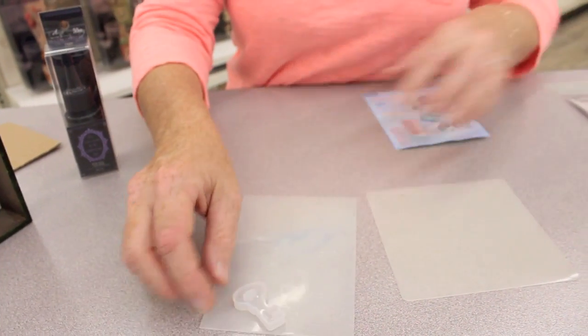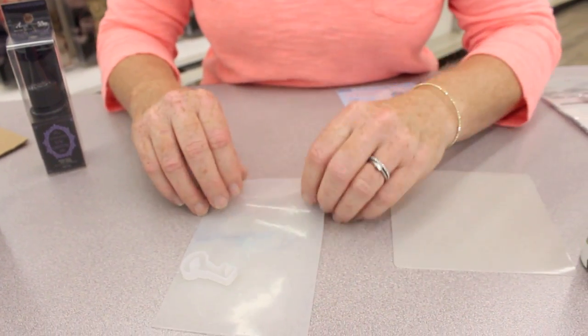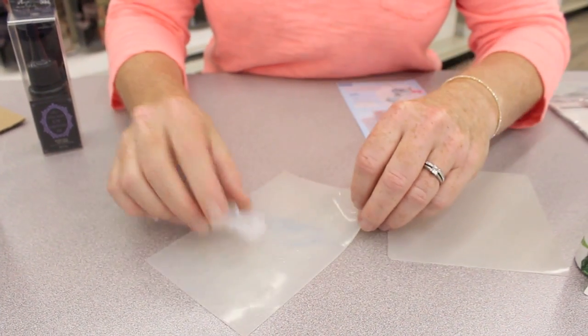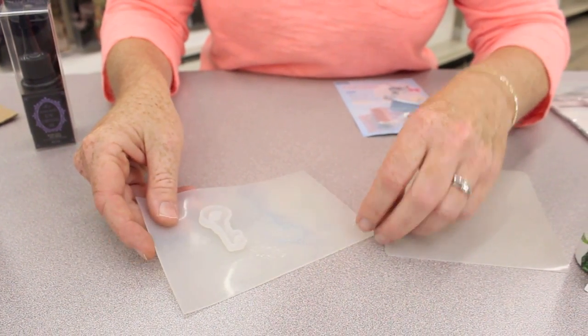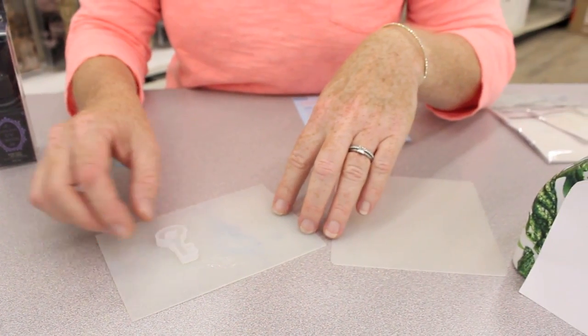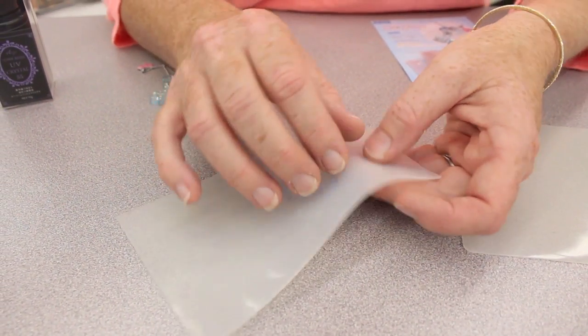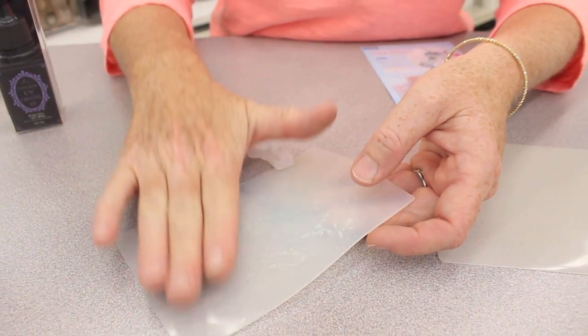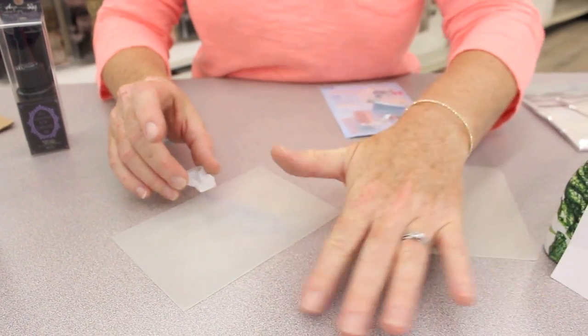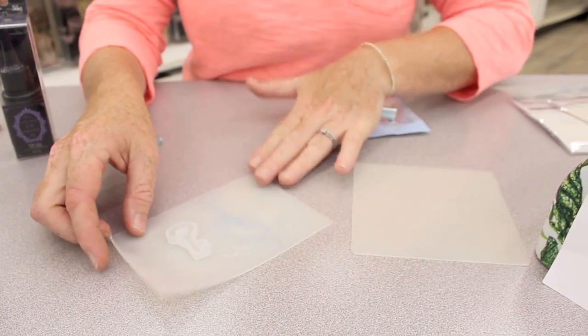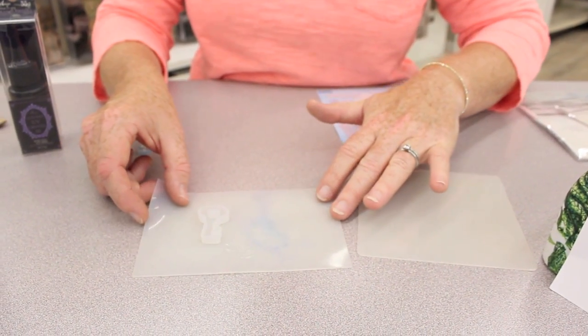You always want to work with this surface because one, it keeps your table clean. Two, when you put the resin on here and then put it inside the lamp, once the resin hardens on here it's easy just to peel off so it keeps the mat, your work table very clean. So very important you have this silicone piece.